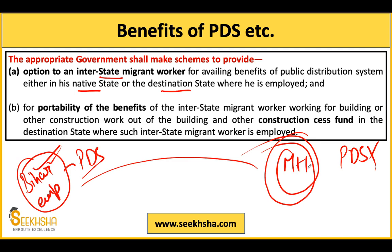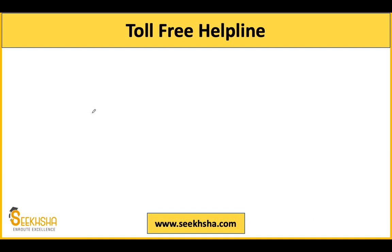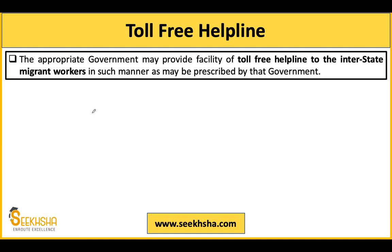For portability of benefits: there is a Construction Welfare Fund for workers involved in building and construction work. If a worker is registered in Bihar but working in Maharashtra, the destination state must also provide him benefits from this particular fund. Additionally, a toll-free helpline shall be created for interstate migrant workers — this responsibility is placed on state governments. This need was further highlighted during the COVID crisis when migrant workers faced severe difficulties.